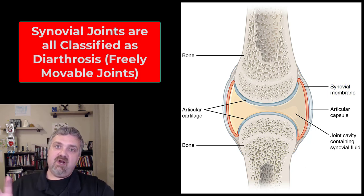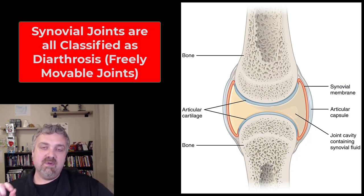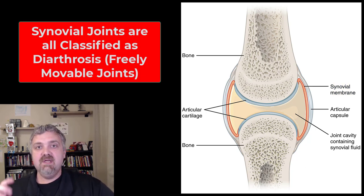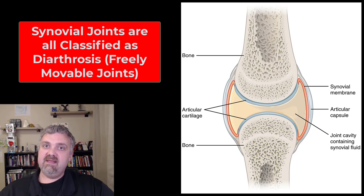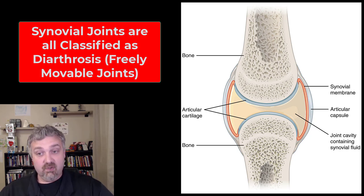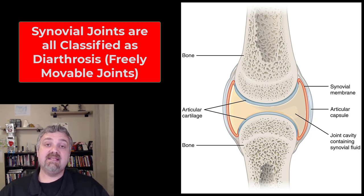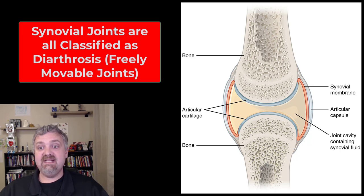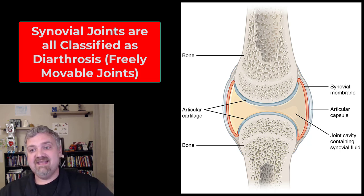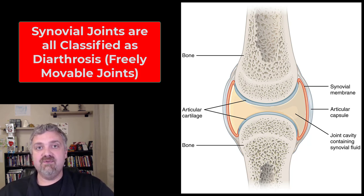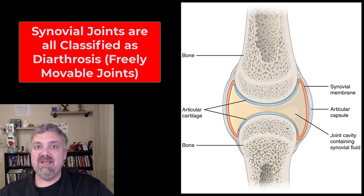Because of this structure and how it's built, each synovial joint like this one will be classified as a synovial joint, but will also be classified as a diarthrosis — a freely movable joint. So that's a typical synovial joint. I hope this helps. Have a wonderful day. Be blessed.